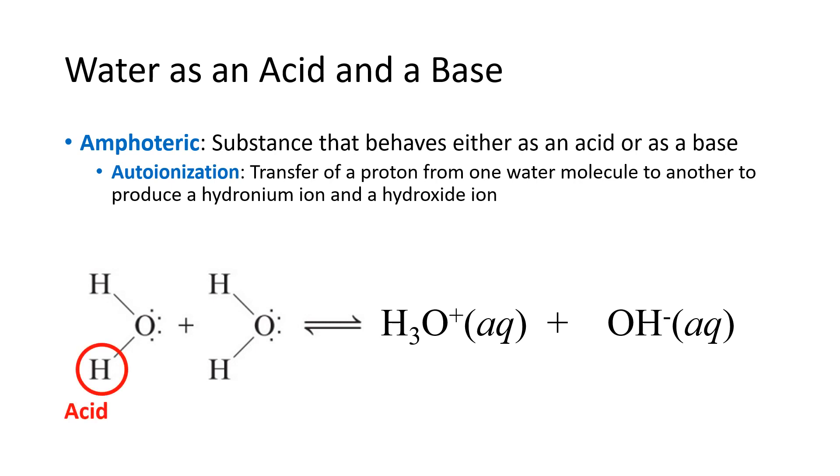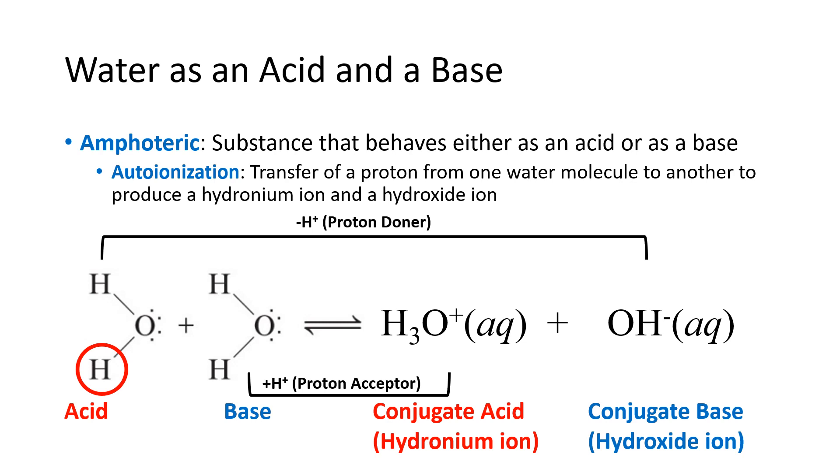In the figure, one water molecule acts as an acid by furnishing a proton, and the other acts as a base by accepting a proton. The result is a base accepting a proton to become the hydronium ion, or conjugate acid, and the acid donates a proton to become hydroxide, the conjugate base.